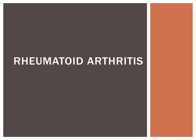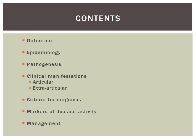This is a brief overview on the topic of rheumatoid arthritis. We will be covering the following topics: the definition, the epidemiology of rheumatoid arthritis, the pathogenesis and clinical manifestations — both articular and extra-articular — with more emphasis placed on the extra-articular manifestations, the criteria for diagnosis as per the American College of Rheumatology, markers of disease activity, and finally, management.